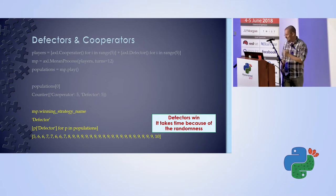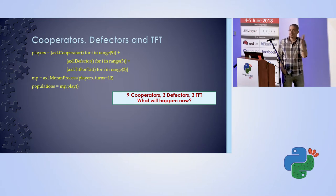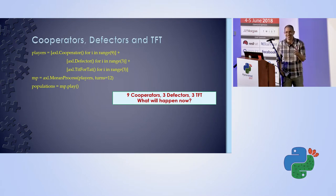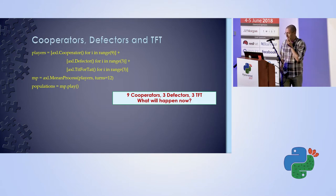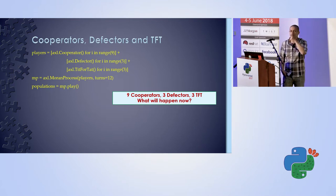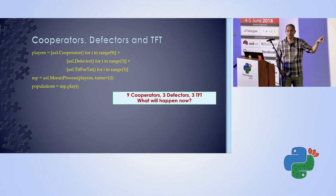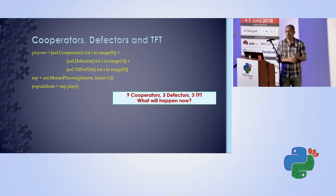Now let's try something more interesting. Say the company has nine cooperators, three defectors, and three tit-for-tat players out of fifteen total. We set up the Moran process with 12 turns per round and run it. I should note that with small numbers like these, randomness plays a big role — each of the three strategy types can theoretically win. But what happened in my simulation is actually really, really interesting.